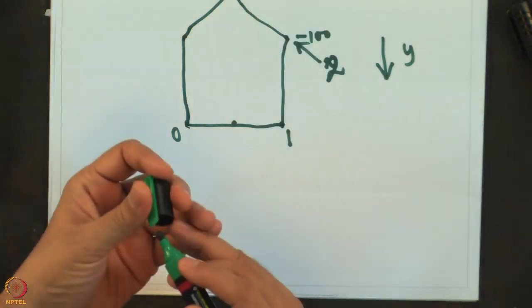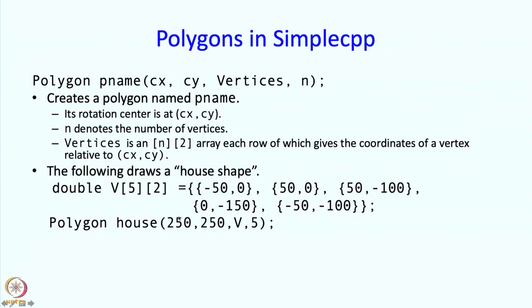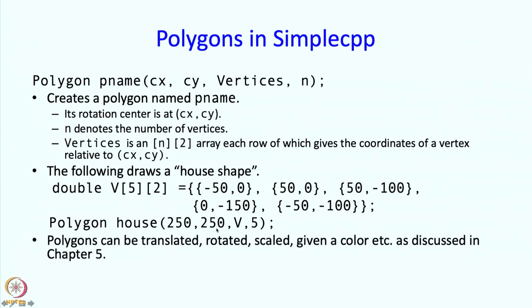The command 'polygon house 250 250' places the house at screen coordinates (250, 250). With respect to those screen coordinates, the polygon coordinates are measured — so for example the leftmost vertex really is at (200, 250) in screen coordinates. Polygons can be translated, rotated, scaled, colored, and transformed exactly as described in chapter 5 of the book.